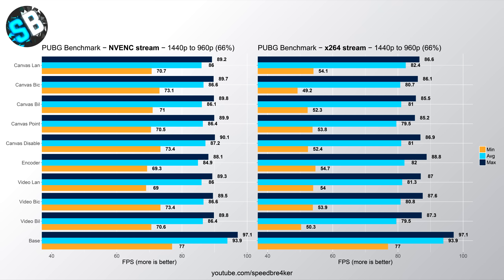Moving on to results at 960p — a 66% downscale — with NVENC on the left and x264 on the right. For NVENC, encoder downscaling still produces the lowest FPS overall, while disabling downscaling or using canvas actually produces the highest FPS, though differences are almost negligible. For x264, overall FPS and especially minimum FPS decrease significantly compared to NVENC. Interestingly, encoder downscaling here produces the second highest performance — an odd result — but generally canvas and video downscaling don't produce dramatically different results, making it hard to judge by performance alone.